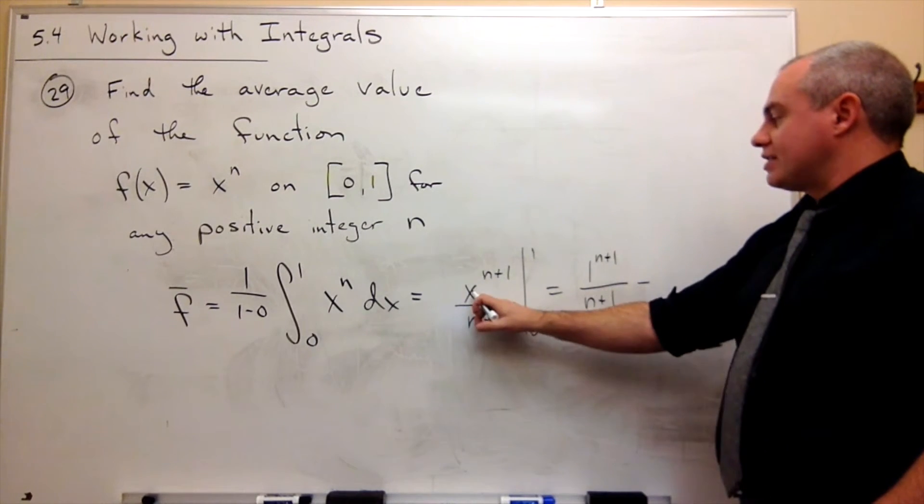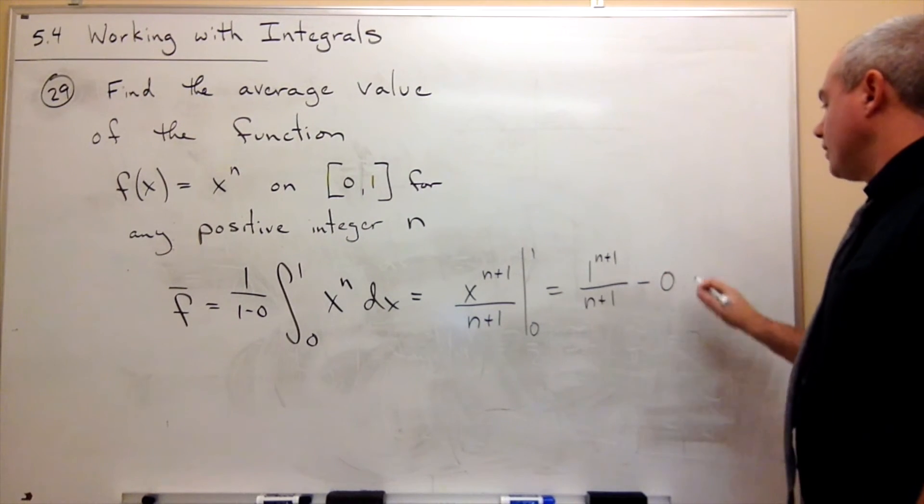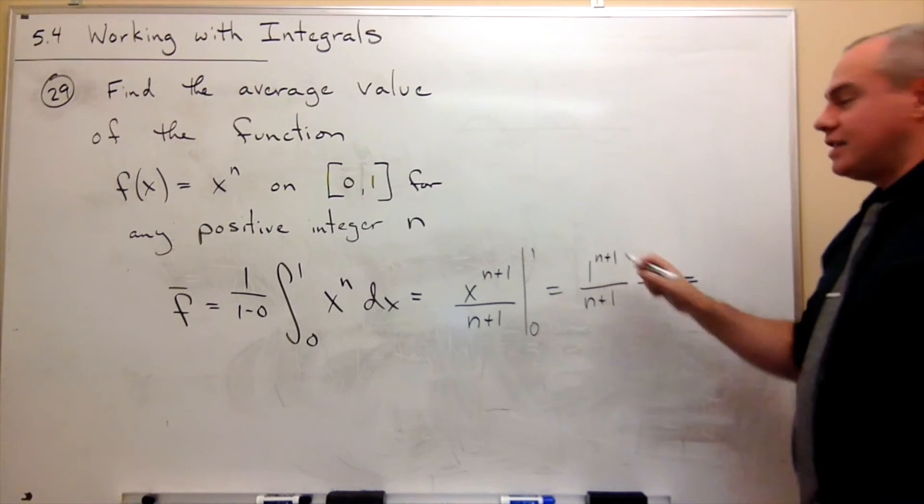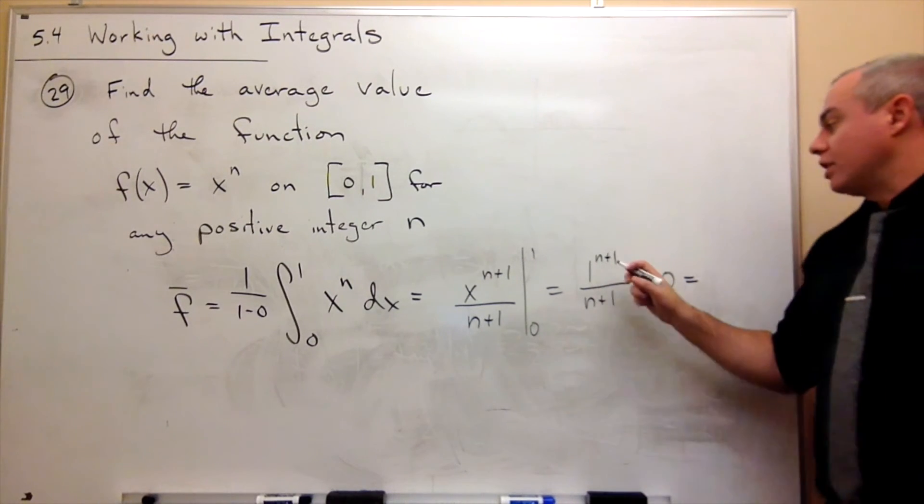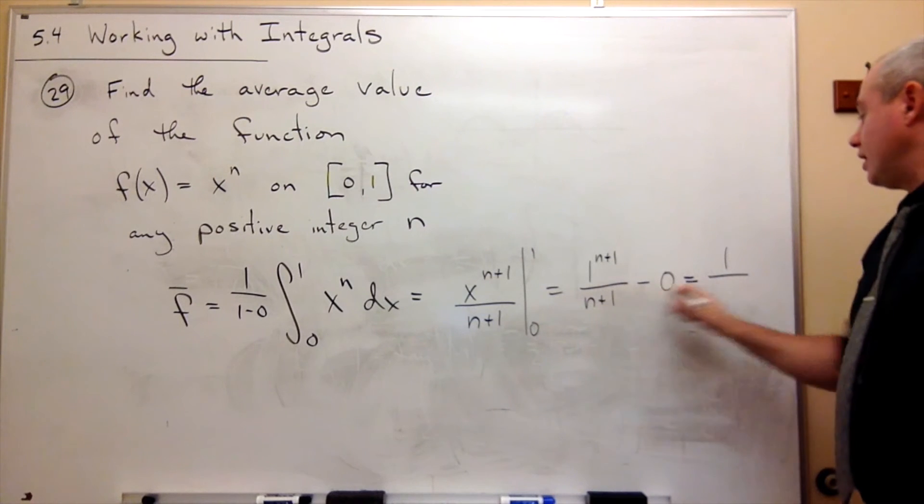I plug in 0 and I get 0 to the n plus 1, which is 0 over something, it doesn't matter, this is 0. So what I end up with is 1 to the n plus 1, which we know is 1 over n plus 1.